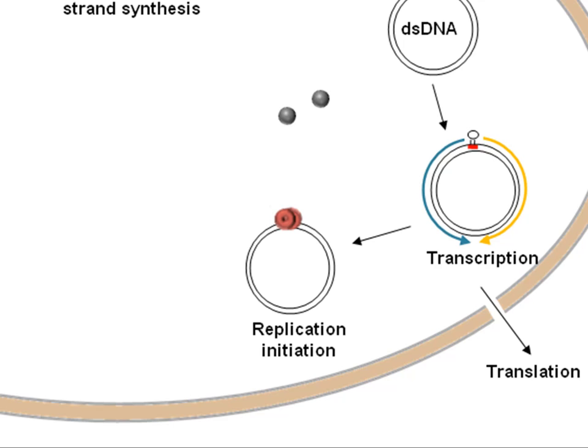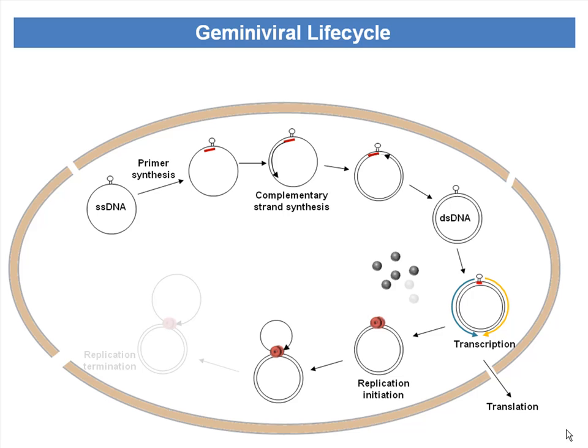Here you can see the red color proteins — that is REF — bound to the viral origin of replication. This protein nicks the viral origin of replication and initiates rolling circle replication. Once the DNA is replicated completely by rolling circle mode of replication, the REF protein once again nicks and ligates to release the newly formed single-stranded viral DNA.